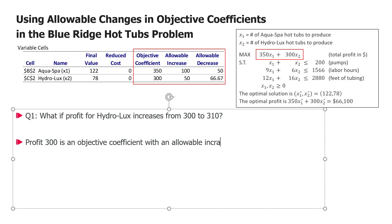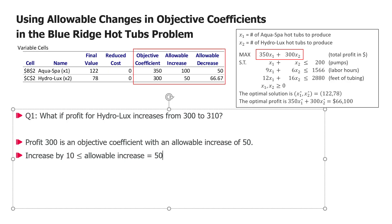The allowable increase is 50. Now I'm increasing by 10, which is less than the allowable increase of 50, so I am within the allowable increase — an increase of at most 50 satisfies this condition. So what do I know from this? As long as one objective coefficient increases or decreases within the limits here, the solution is not altered. So I can say the old optimal solution remains optimal — it does not change.